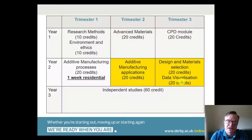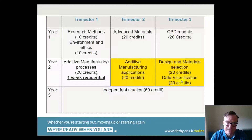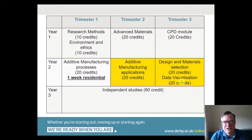In the final year you undertake your independent study — a full year's worth of study across three trimesters working on a specific project related to advanced materials and additive manufacturing, with supervision from a member of staff. If it's a hardware-based project requiring use of university equipment, you would need to be based on site to complete it.